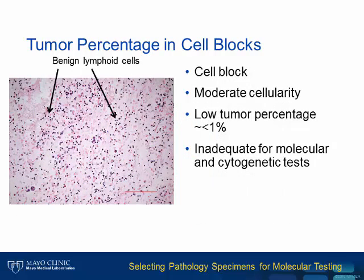Here is another cell block that has a fair amount of cellularity to it, but it is almost all inflammatory cells, with only rare tumor cells, which would be inadequate for most methods.